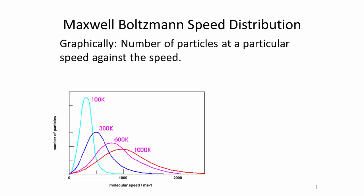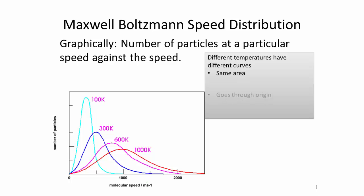Now if we do a graph of the number of particles at a particular speed against the speed, you get a graph which looks a bit like this. Now what we can see from this are certain features. First of all, different temperatures have different curves. They basically have the same area because the total area under each curve gives you the total number of particles. Also it goes to the origin.